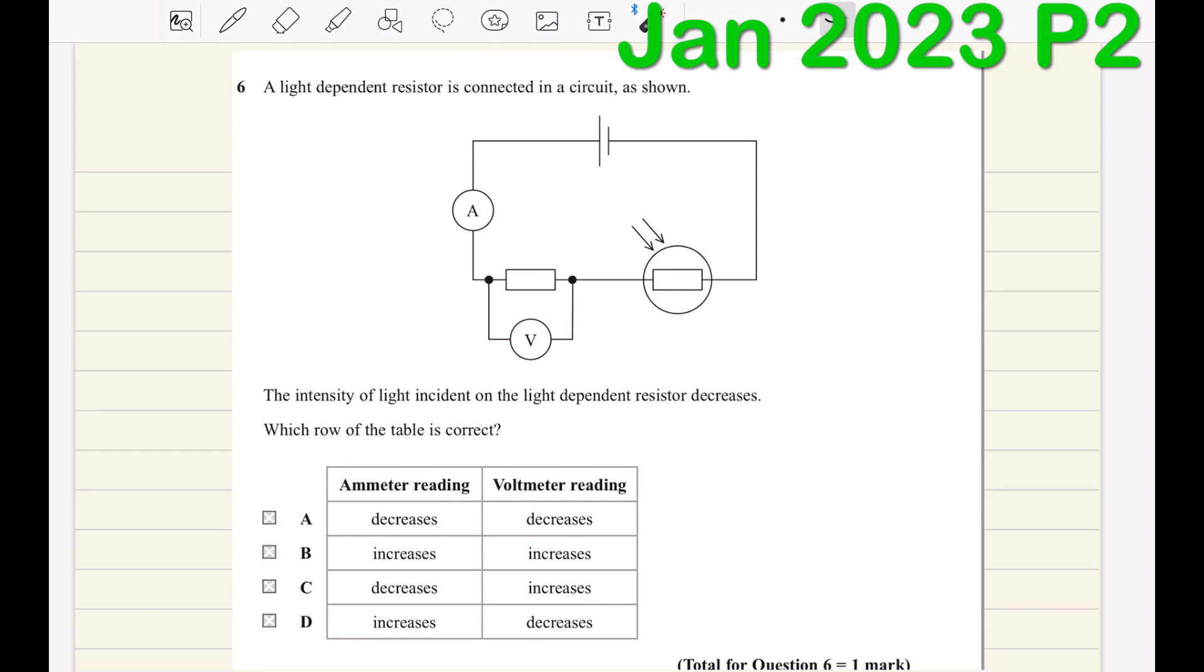This affects the reading of the ammeter negatively, so the ammeter reading is going to be less. Less current is passing through the electric circuit. There is less voltage across the fixed resistor, so the voltmeter reading across the fixed resistor is going to be less as well.